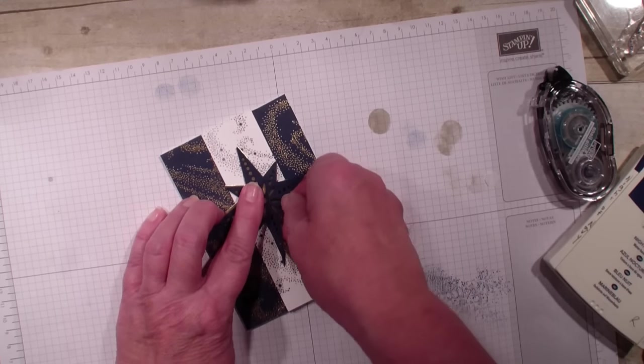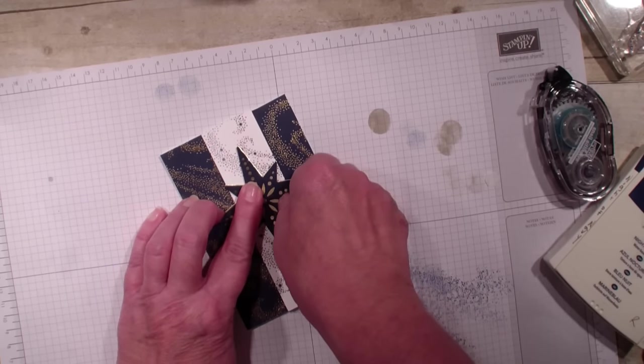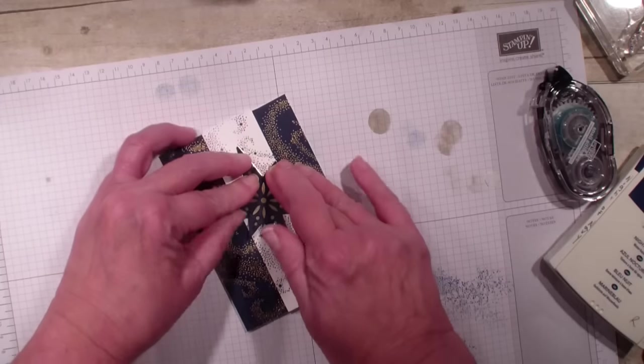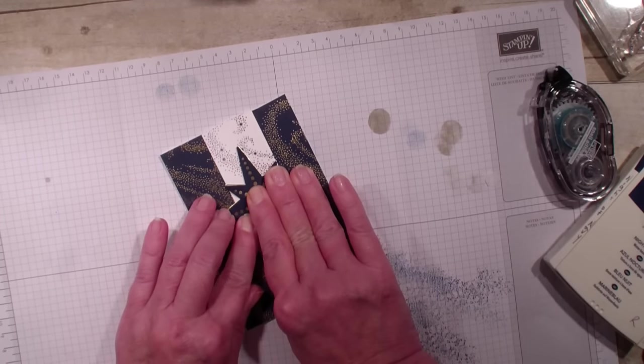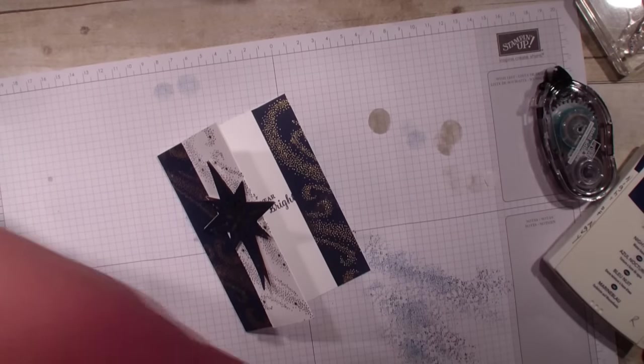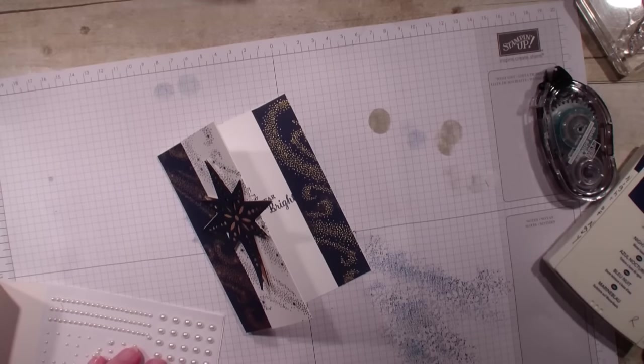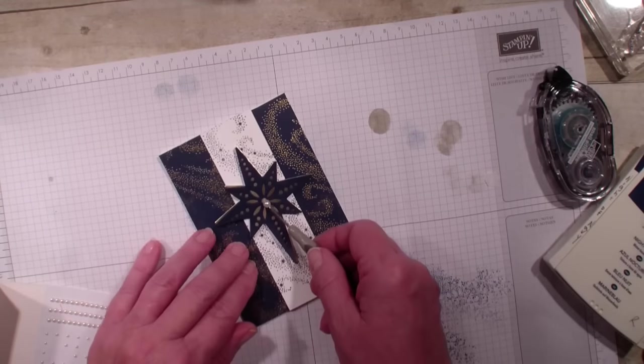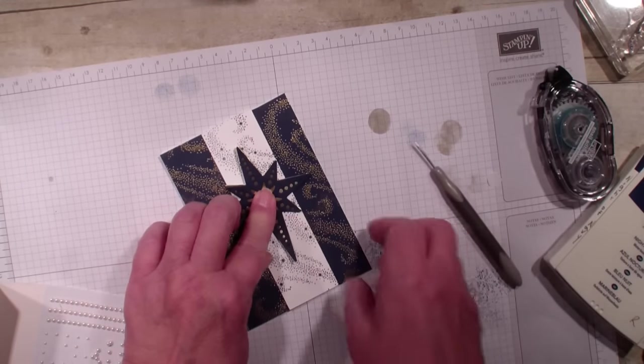You're going to want to check out my stamp of the month for this month. This is a very pretty bundle for Christmas. Lots of different possibilities. I'm then going to get a pearl and just add a pearl to the front of that card. So there you have it.